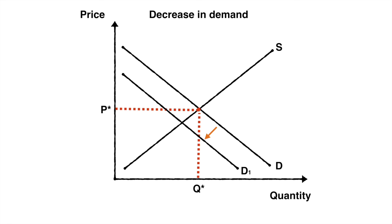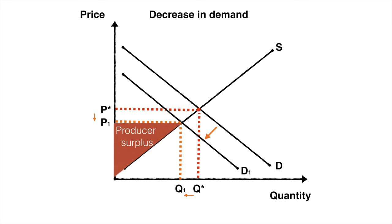Suppose the demand for a product falls due to a change in fashion that makes the product less desirable. Once the demand curve shifts left, the equilibrium price and quantity both decrease. We apply the same logic to deduce the new producer surplus and consider the area below the new market price and above the supply curve to find our new producer surplus, which appears to have decreased.